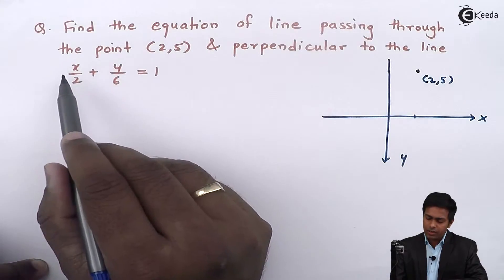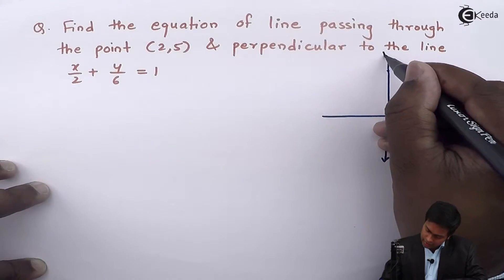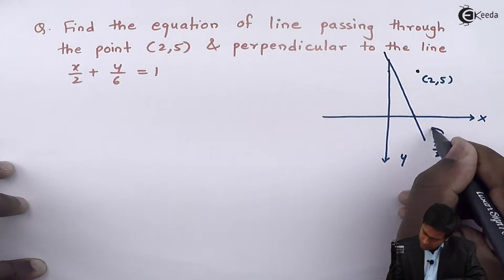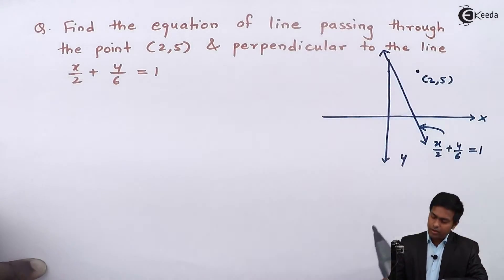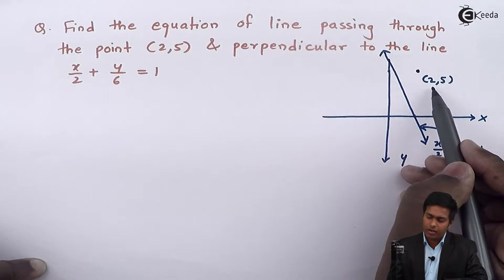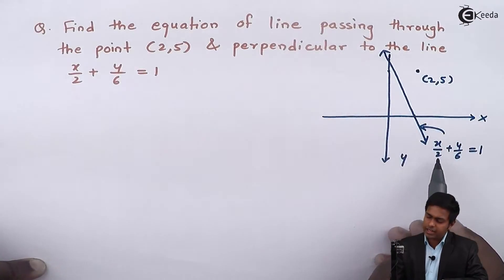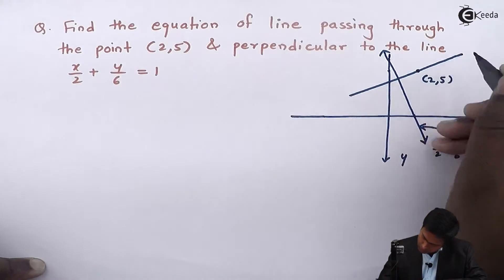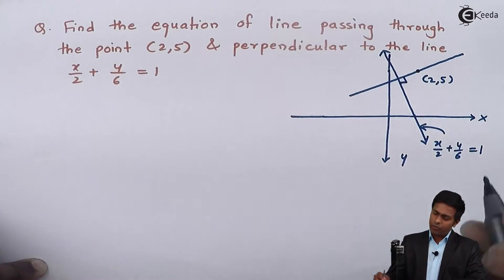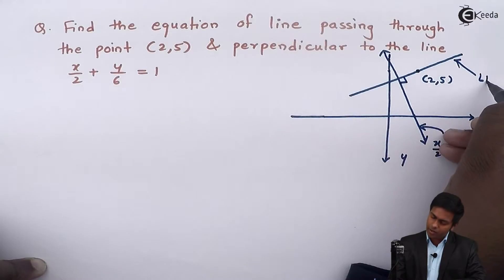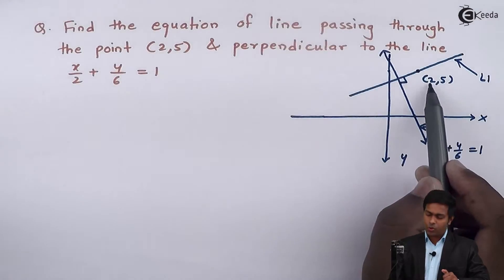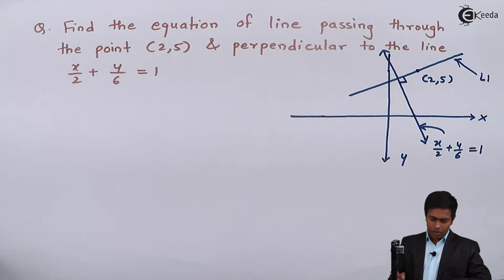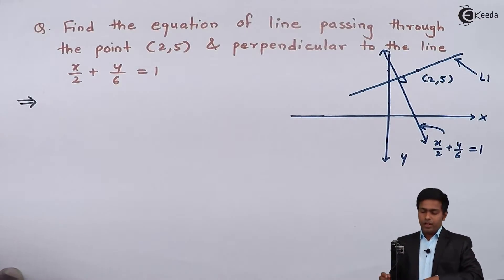The required line is also perpendicular to the line x/2 + y/6 = 1. If I plot the points of this line, we get this line. The required line passes through point (2, 5) and is perpendicular to x/2 + y/6 = 1, so the required line must look like this. Let's call this line L1 — we want to find the equation of line L1.